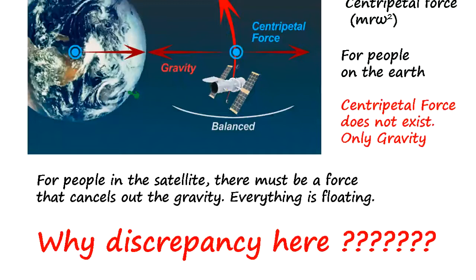So why is everything floating in the satellite? Actually, it's a perspective issue. For people on Earth, you look at the whole system and there's no centripetal force, only gravity force existing. But for people in the satellite, there must be a force - otherwise why is everything floating?